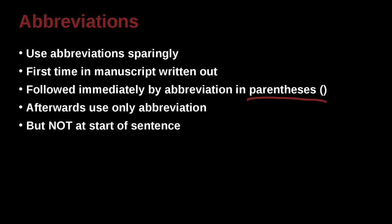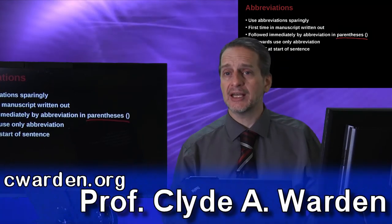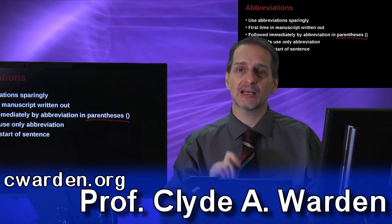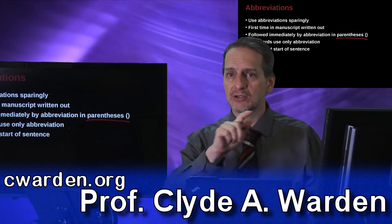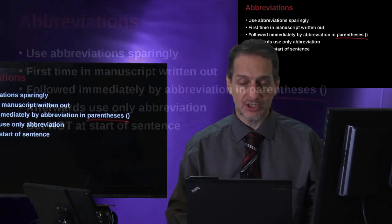First, the first time you use the abbreviation, you must explain what is it so that the reader knows. Then after the first time you can go ahead and continue using the abbreviation, but not at the beginning of a sentence. And if you need to begin a sentence with this abbreviation, you need to write it out totally every word, and not use the abbreviation.